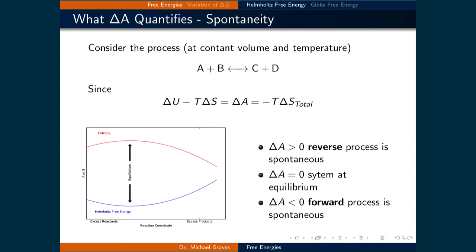This is from the negative sign in the relationship between them. Processes with positive entropy changes are spontaneous, which means they must have a negative change in the Helmholtz free energy to be spontaneous. If delta A is equal to zero, then the system is at equilibrium, and if delta A is greater than zero, then the reverse process is spontaneous.